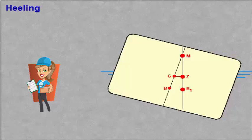If the ship heels, the centre of buoyancy B moves to B1 because the shape of the underwater hull is changing. The force working at B1 is still vertical and straight through the metacentre M.